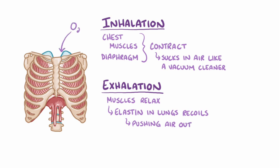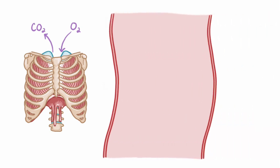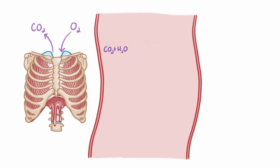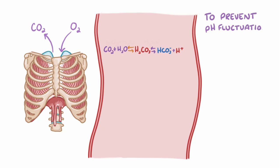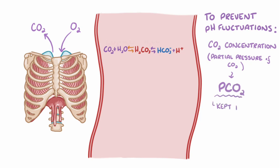Ultimately, the lungs need to pull oxygen into the body and get rid of carbon dioxide. Carbon dioxide binds to water in the blood and forms carbonic acid, which then dissociates into hydrogen ions and bicarbonate ions. So, in order to prevent pH fluctuations, the carbon dioxide concentration — or the partial pressure of carbon dioxide, called pCO2 — needs to be kept within a fairly narrow range. For this reason, the lungs maintain the ventilation rate they need to get rid of carbon dioxide at the same rate that it's created by the tissues.